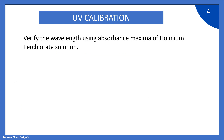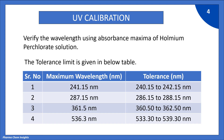Verify the wavelength using absorption maxima of Holmium perchlorate solution at these 4 wavelengths. First wavelength is 241.15 nm with tolerance limit 240.15 to 242.15 nm. Second wavelength is 287.15 nm with tolerance limit 286.15 to 288.15 nm. Third wavelength is 361.15 nm with tolerance limit 360.15 to 362.15 nm. The final wavelength is 536.15 nm with tolerance limit 533.30 to 539.30 nm.